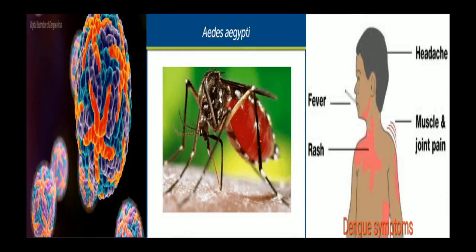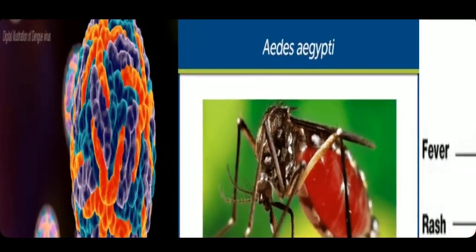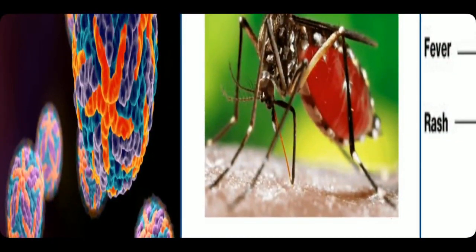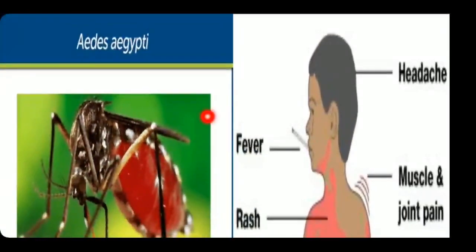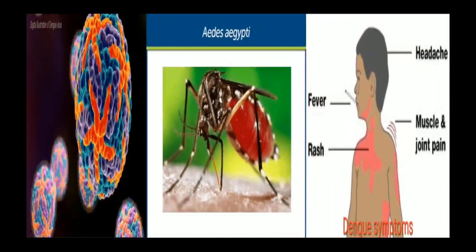The next disease is dengue. It is caused by dengue virus, which is transmitted by the Aedes aegypti mosquito. Symptoms include headache, fever, rashes on the body, and muscle and joint pain. Prevention includes wearing protective clothing, using mosquito repellent, and importantly, not letting water stagnate around your houses, as stagnant water creates a breeding habitat where mosquitoes multiply. Avoid collecting stagnant water nearby your houses.